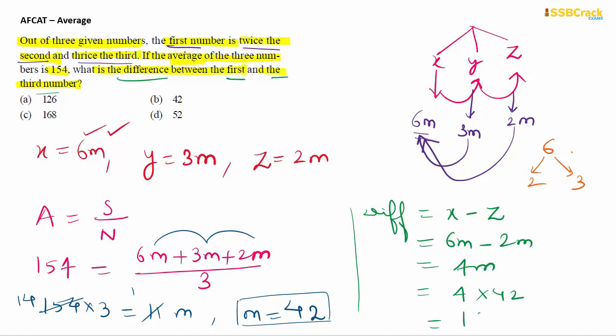4 × 42 = 168. The required answer is Option C.